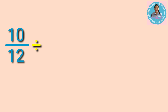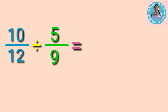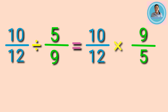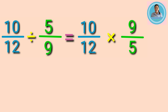Let's have another example: ten twelfths divided by five ninths equals. Okay, let's copy the dividend ten twelfths, then get the reciprocal of the divisor five ninths. The reciprocal of five ninths is nine fifths. Next, change the division sign into multiplication sign.